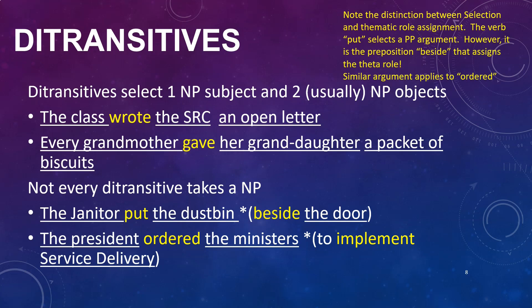Ditransitive verbs select one noun phrase subject and two noun phrase objects. 'The class wrote the SRC an open letter' — 'wrote' selects 'the class' as subject, 'the SRC' as indirect object, and 'an open letter' as direct object. 'Every mother gave her granddaughter a pack of biscuits' — 'gave' selects 'every grandmother' as subject, 'her granddaughter' as indirect object, and 'a packet of biscuits' as direct object. But not every ditransitive takes a noun phrase — the verb 'put' requires a prepositional phrase: 'the janitor put the dustbin beside the door.'